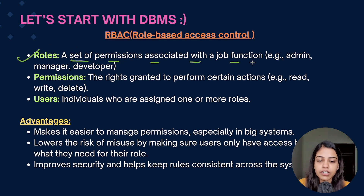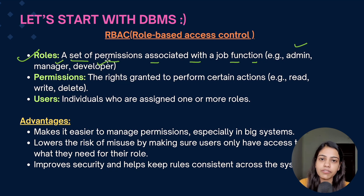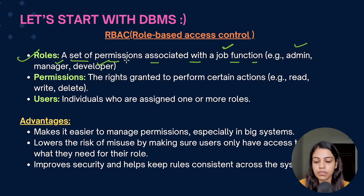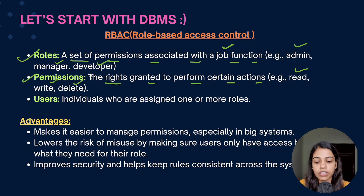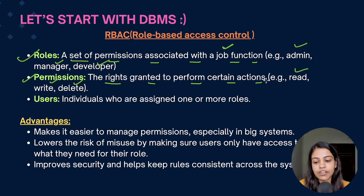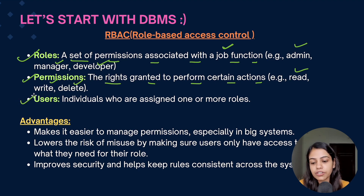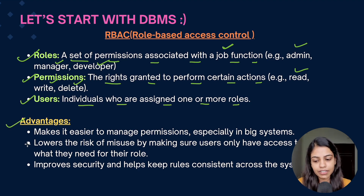For example, a database administrator might create roles like 'db_read' for reading data and 'db_write' for modifying data. Only people with the right role can read or change information. A role is basically a set of permissions associated with a job function — for example, admin, manager, or developer. Permissions are the rights granted to perform certain actions such as read, write, or delete operations. Users are the individuals assigned one or more roles.